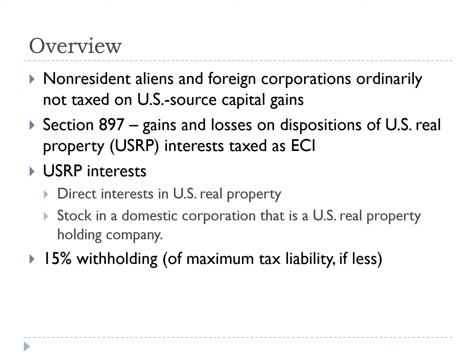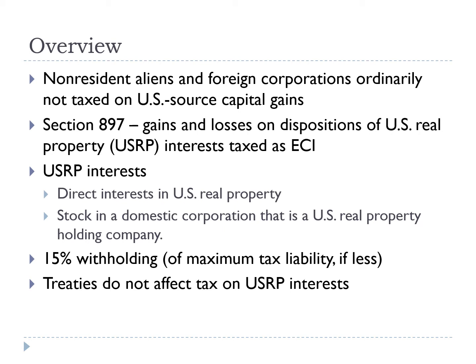On a disposition of a U.S. real property interest, tax is generally withheld by the transferee at a rate of 15% of the amount realized, except that withholding is limited to the transferee's maximum tax liability if it is less. U.S. tax treaties generally have no effect on the U.S. taxation of dispositions of U.S. real property interests.